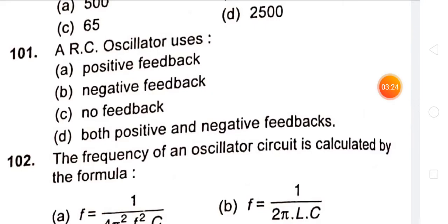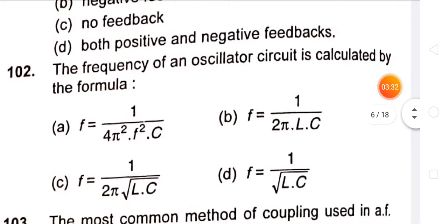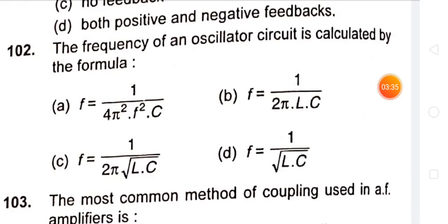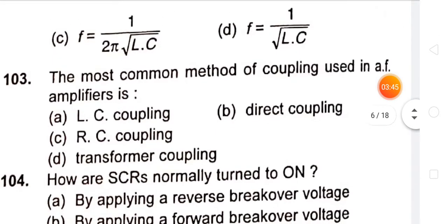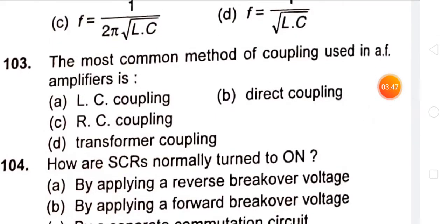An RC oscillator uses positive feedback. The frequency of an oscillator circuit is calculated by the formula f equal to 1 by 2 pi root LC. The most common method of coupling used in AF amplifiers is RC coupling.